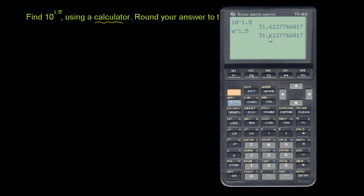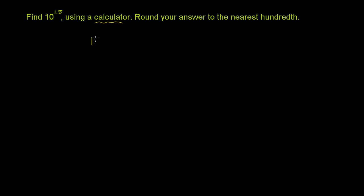So if we round to the nearest hundredth, it's 31.62, because the thousandths place is less than 5. So we round down, 31.62. So 10 to the 1.5th power is approximately equal to 31.62 when we round to the nearest hundredths.